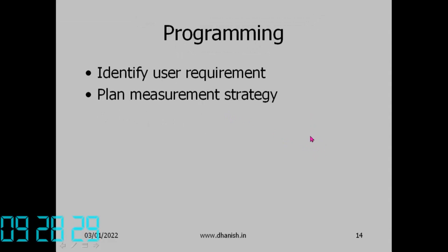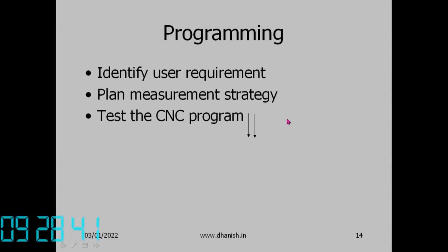For programming, the steps are: identify user requirements including allowable measurement uncertainty; plan the measurement strategy including number and distribution of points, work holding, and other parameters; then test and verify the CNC program. If it is a one-time measurement, the program is run directly; for repeated measurements, the program is stored. Modern CMM software also has simulation capability similar to CNC machining simulation.